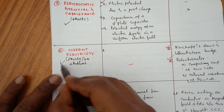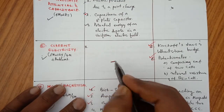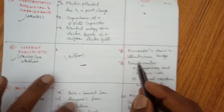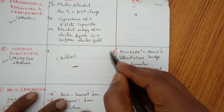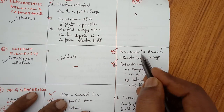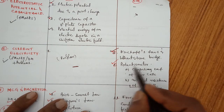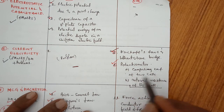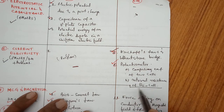Sixth chapter is Current Electricity — this carries 8 marks and the weightage is 10 marks plus problems. For 4 marks: explain the Wheatstone bridge principle — very, very important, and there is an attached problem based on it. Second question: what is a potentiometer? Compare the EMF of two given cells, and find the internal resistance of a given cell using a potentiometer.